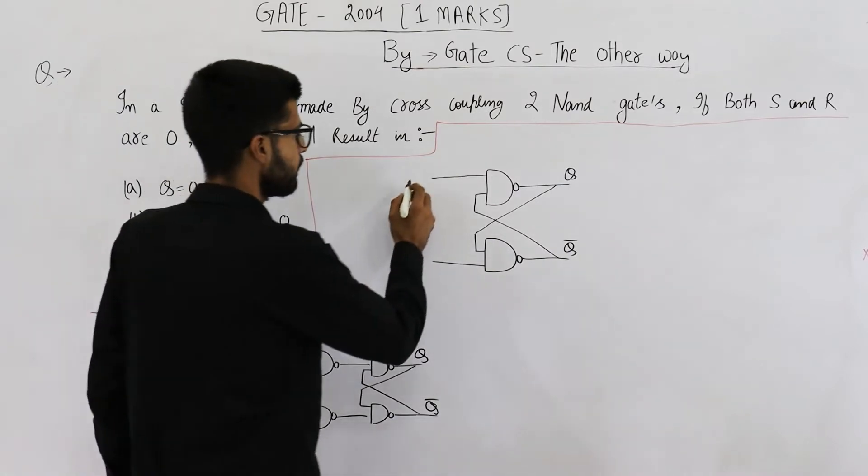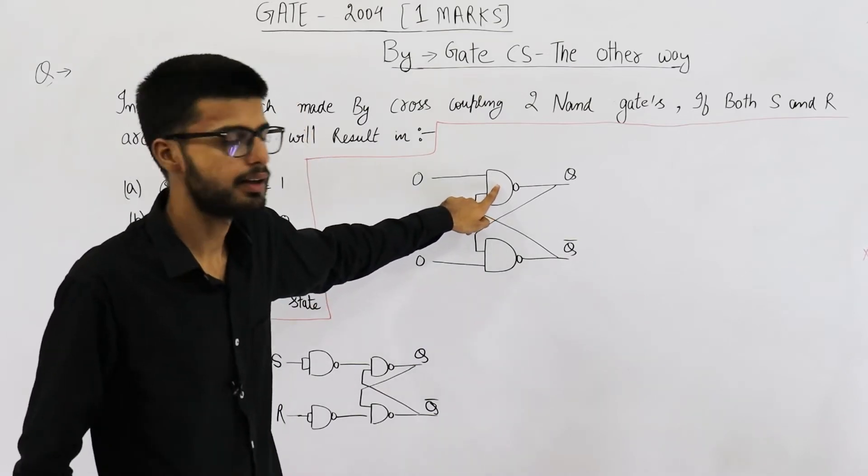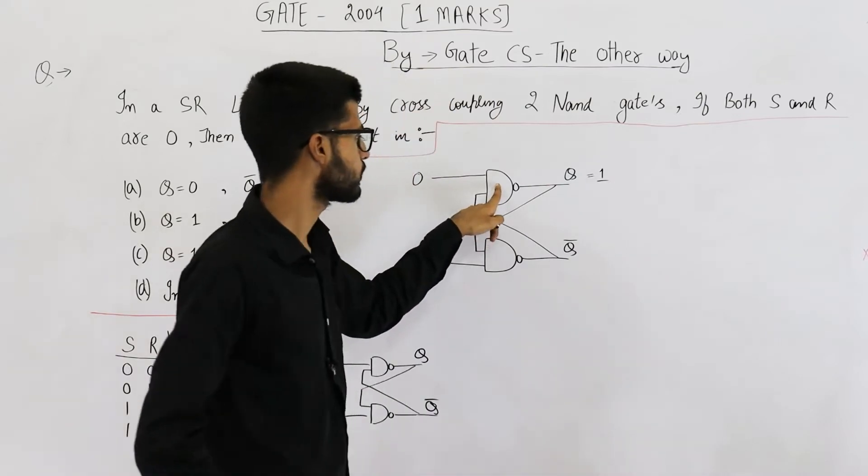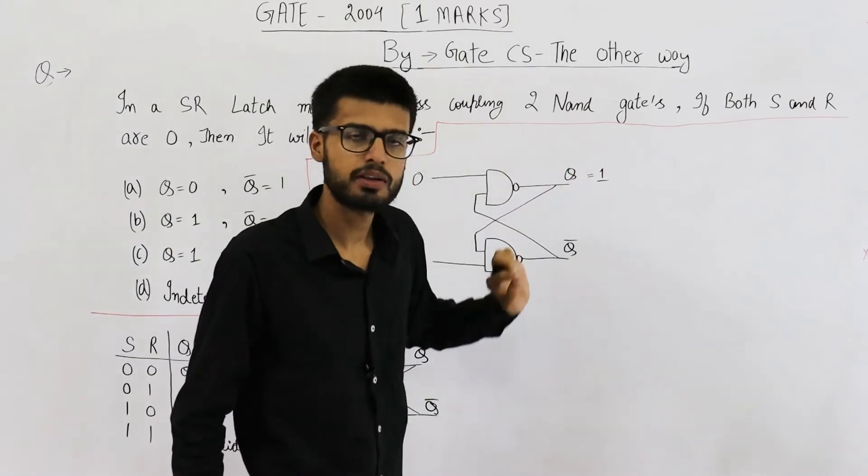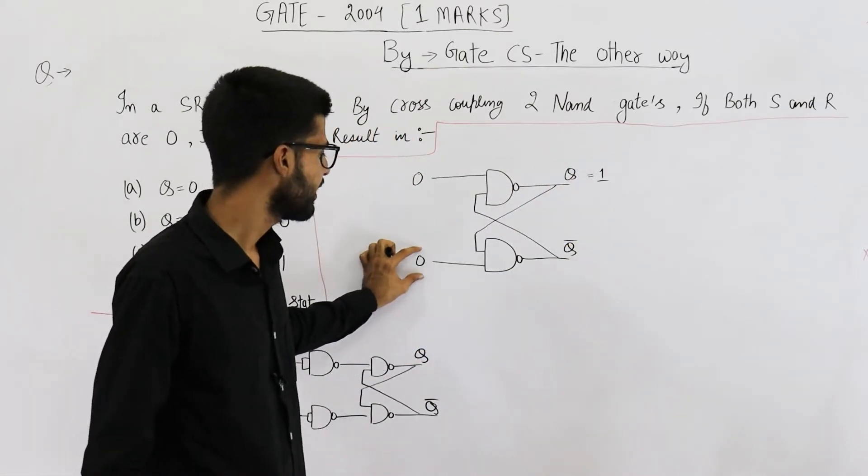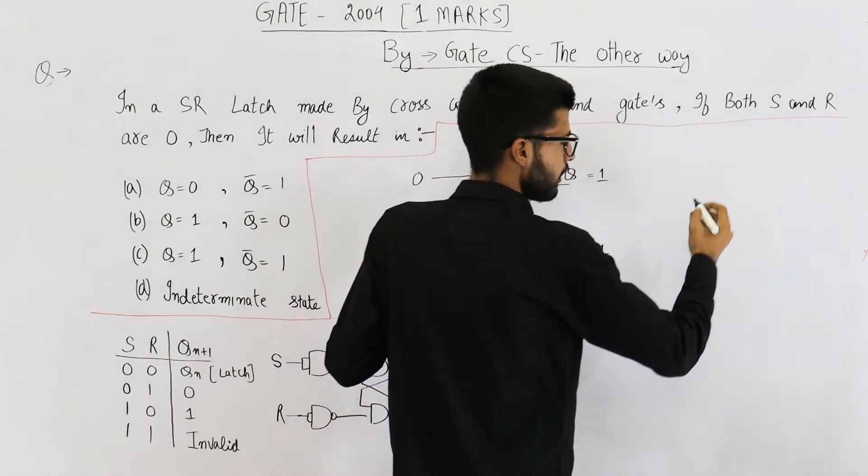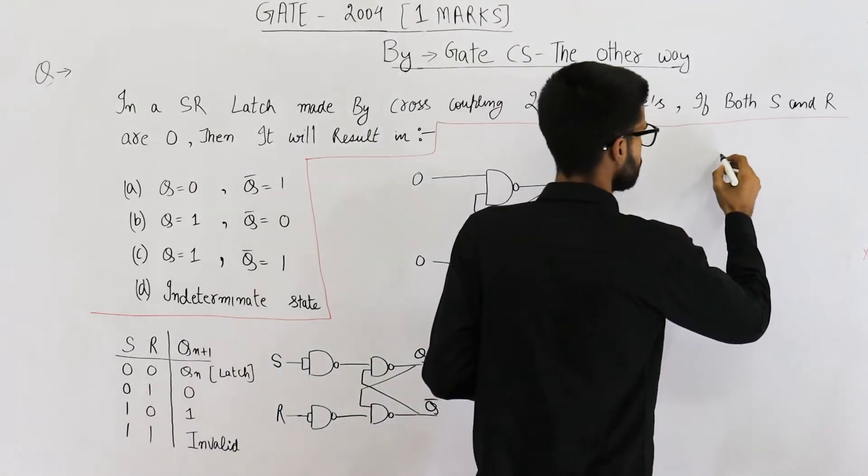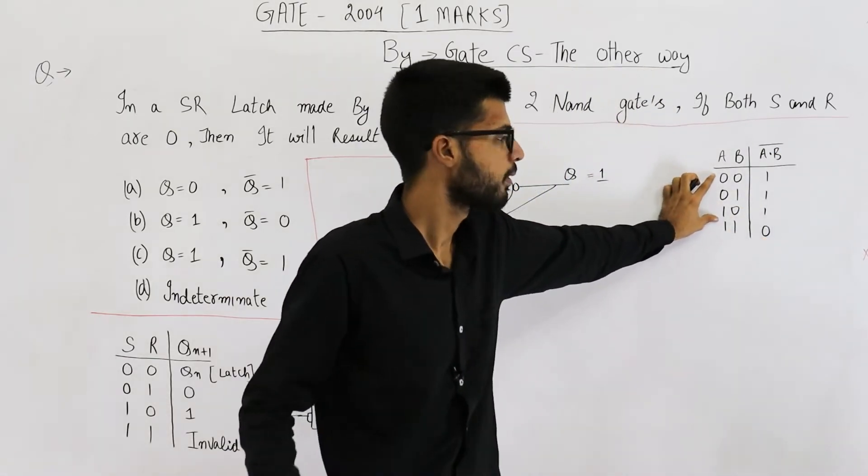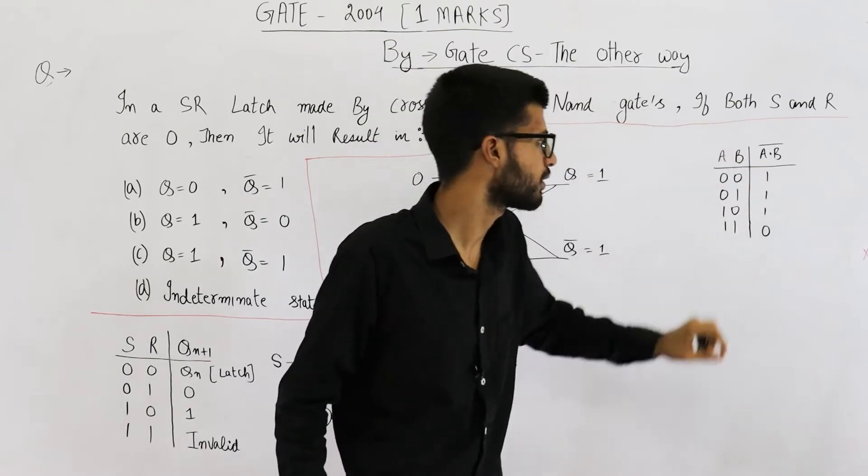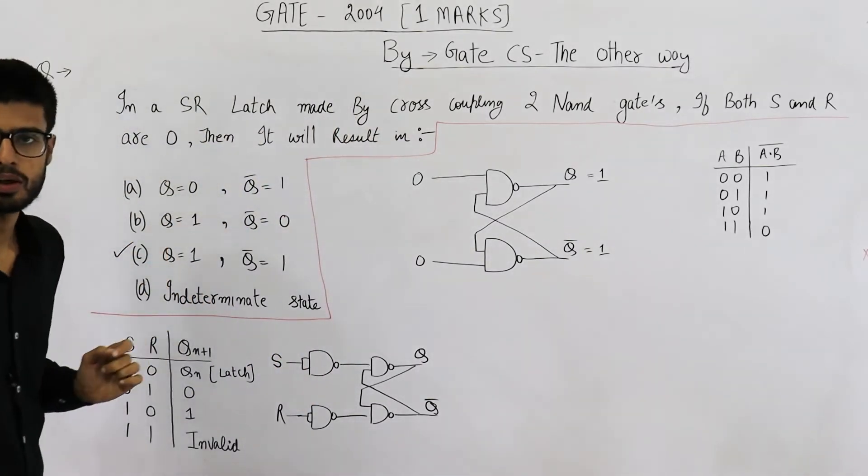Let us see what will happen. If this is 0, this one is also 0. You can see this NAND gate will output 1. Because even if one of the inputs of a NAND gate is 0, the output is surely 1. Here also, even if one of the inputs of NAND gate is 0, the output will surely be 1. See, I am writing the truth table for a NAND gate. In these three cases, even if one of the inputs is 0, the output is going to be 1. So you can see Q and Q bar are 1, 1. That means option C is your answer.